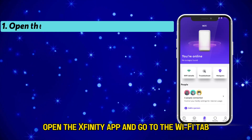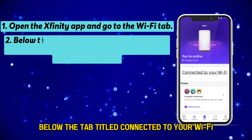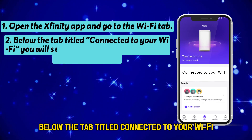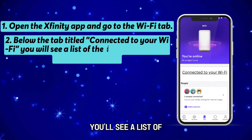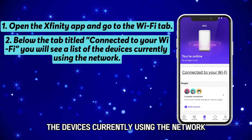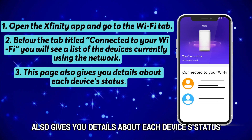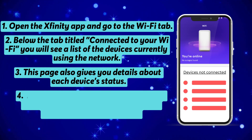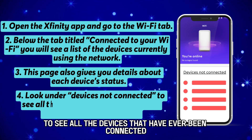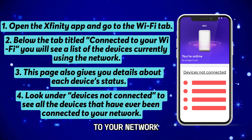Open the Xfinity app and go to the Wi-Fi tab. Below the tab titled 'Connected to your Wi-Fi,' you'll see a list of the devices currently using the network. This page also gives you details about each device's status. Look under 'Devices not connected' to see all the devices that have ever been connected to your network.